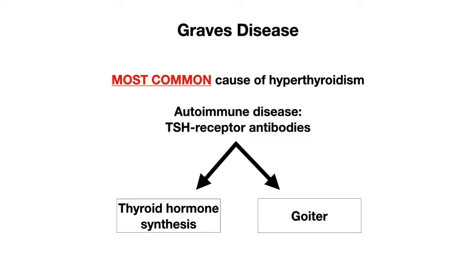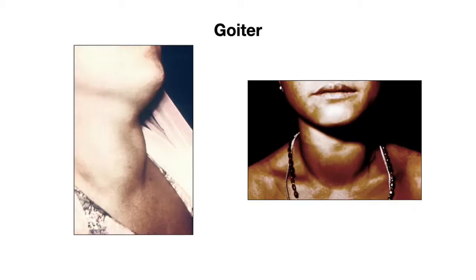Graves' disease is actually the most common cause of hyperthyroidism. It is an autoimmune disease caused by antibodies that are directed against the TSH receptor, also known as the thyrotropin receptor. These antibodies are stimulatory and so they lead to thyroid hormone synthesis as well as thyroid gland growth, which leads to an enlargement of the thyroid gland, also known as goiter.